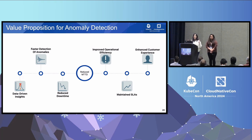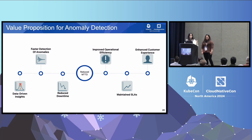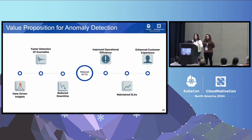Let's tie together the value proposition for anomaly detection in the context of observability and our astronomy online store. We leveraged anomaly detection to generate data-driven insights, detect regressions faster, effectively reduce downtime, and reduce mean time to detect. This also improved operational efficiency, maintained SLAs, and enhanced customer experience, leading to a stellar experience on Stellar Stash.